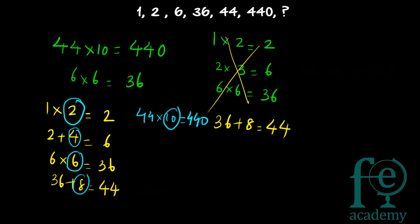This is also an example of an arithmetic-geometric series, where both multiplication and addition are taking place alternately: first multiplication, then addition, again multiplication, then addition, then multiplication. The next process will be addition. Following the series 2, 4, 6, 8, 10, the next number is 12, so our answer will be 440 plus 12 is equal to 452.